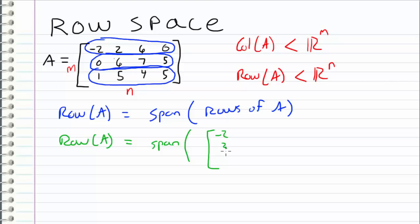negative two, two, six, zero, which is the first row; zero, six, seven, five, which is the second row;